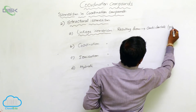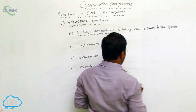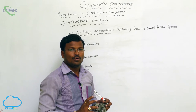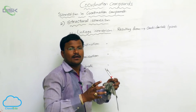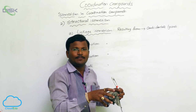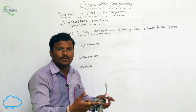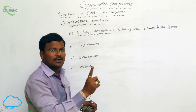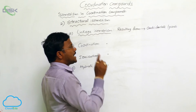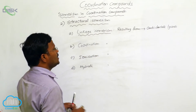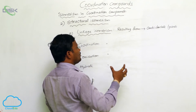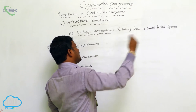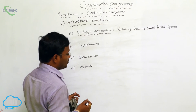Ambidentate ligands are a type of unidentate ligand having two atoms capable of forming a coordination covalent bond with a metal, but not at the same time. Either of the atoms present in the ambidentate ligand can donate electrons toward the metal atom. Such ligands are called ambidentate ligands, and coordination compounds formed from them can show linkage isomerism.